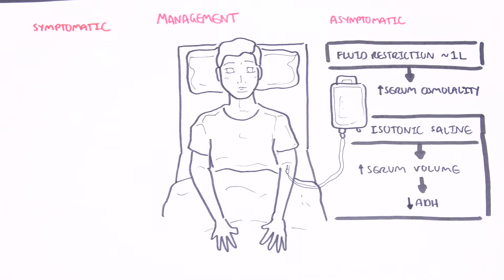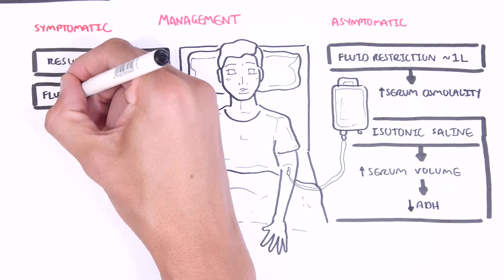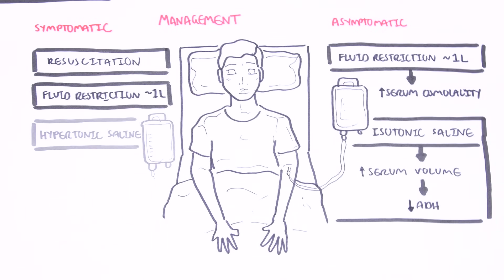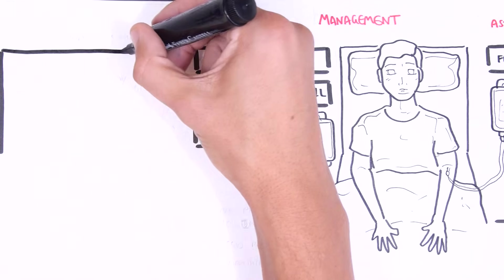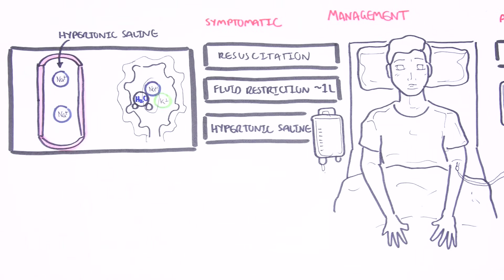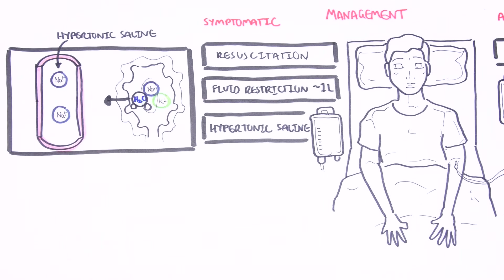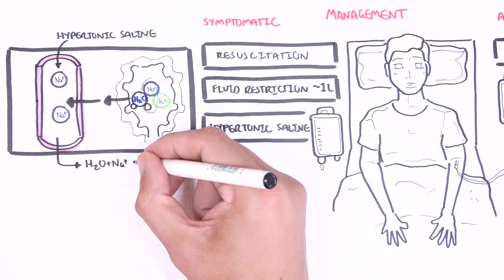In acute severe hyponatremia, which tends to be symptomatic, management should be quick to prevent cerebral edema. This includes resuscitation if necessary, strict fluid restriction, and the administration of slow hypertonic saline. Hypertonic saline helps increase serum sodium levels, which draws water into the intravascular space. Once the water is in the intravascular space, the body can excrete the sodium and water and balance out sodium levels.